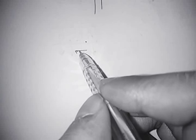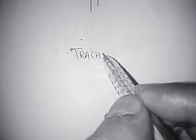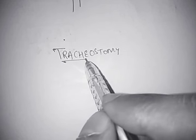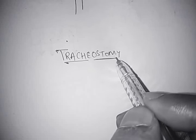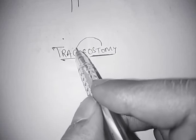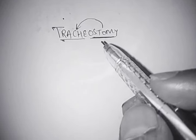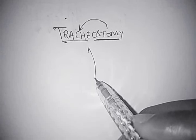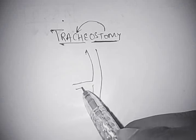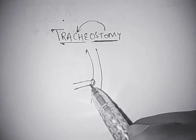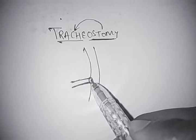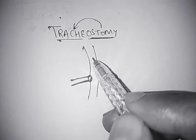Today we will discuss a very important topic: tracheostomy. Tracheostomy is made up of two words — trachea and stoma. Stoma means opening, so this opening is created in the trachea. The procedure in which we create an opening in the anterior wall of the trachea is called tracheostomy.